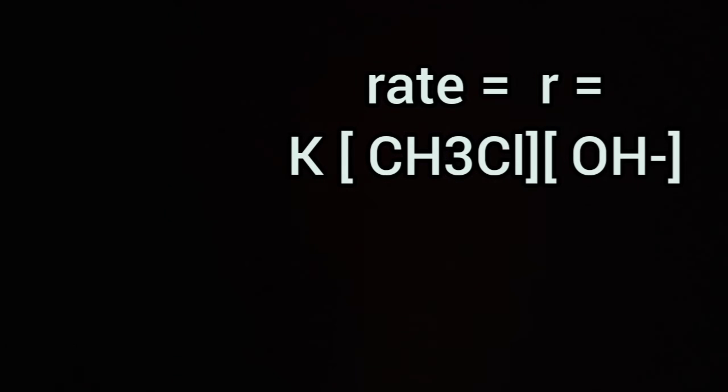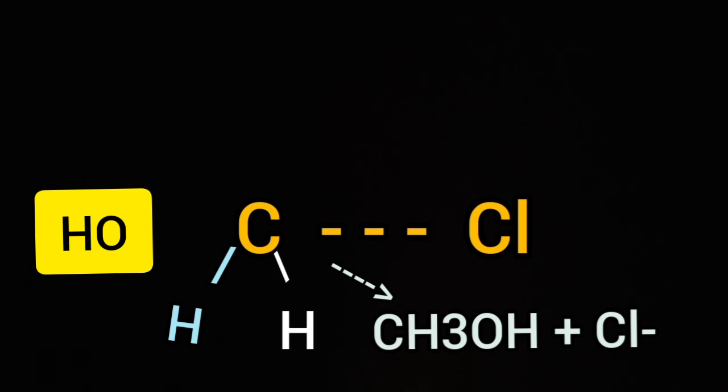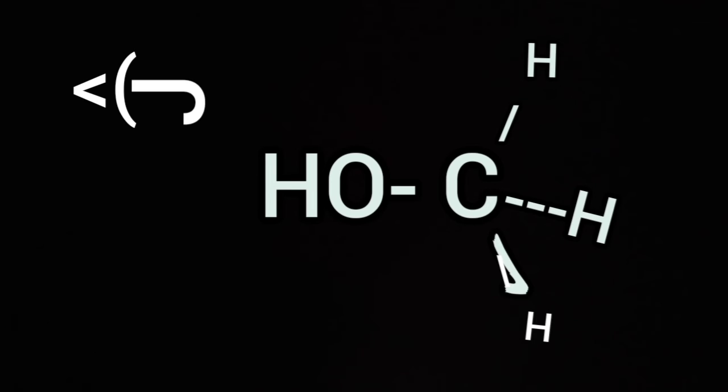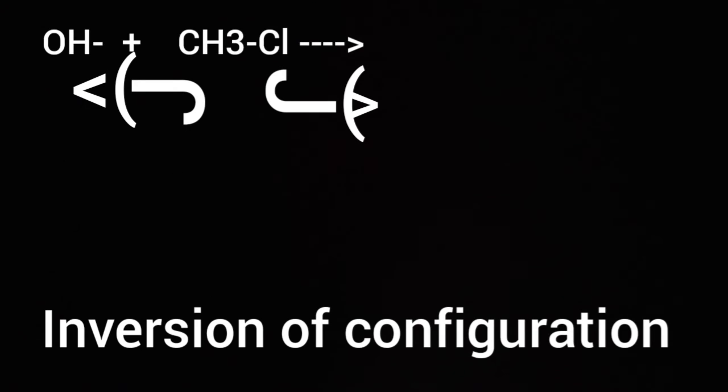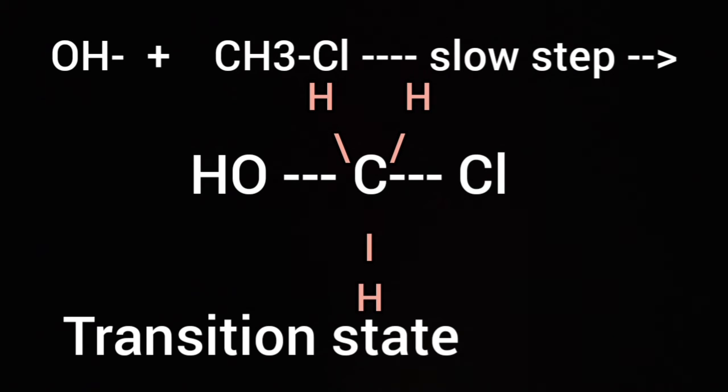In this process, the configuration of carbon atom under attack inverts in much the same way as an umbrella is torn inside out in a gale or cyclone, while the leaving group is pushed away. This process is called inversion of configuration.